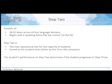Step two is the first part of the operational test with 28 to 32 items across all four language domains. The first four items are speaking items scored on the fly. Most students will complete step two and be done with the test — a small percentage will continue to step three because they have the potential to be proficient. Step two is scored as the student tests, either by the TA with the on-the-fly speaking task or the computer with the remaining items.